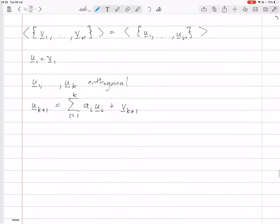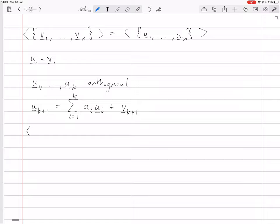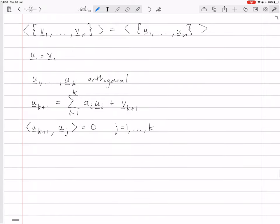Okay, and we want the inner product of uk plus 1 with any vector uj, where j is 1 or 2 or 3 or anything up to k. You want those all to be 0. So, if you do this inner product, so you put this sum in here. Okay, put the sum in here.